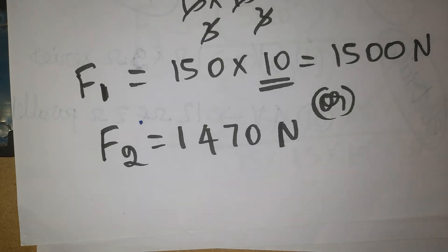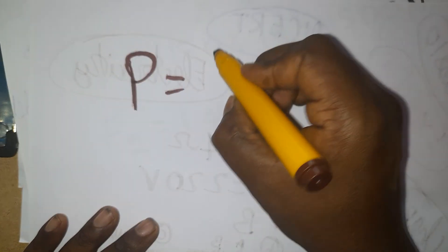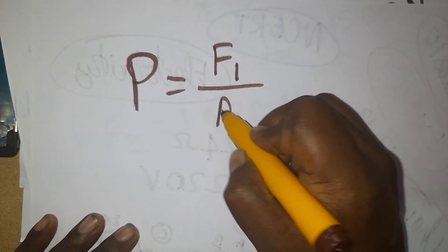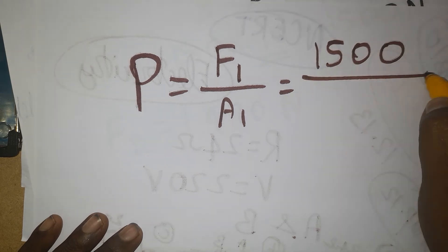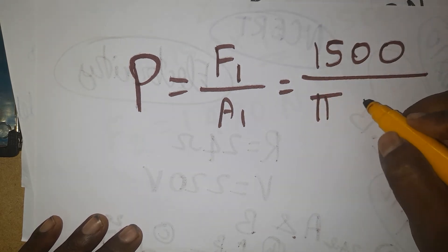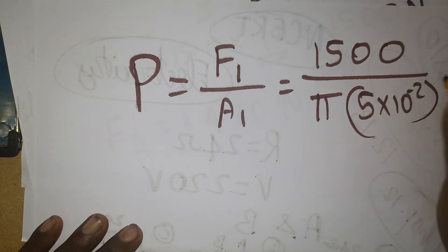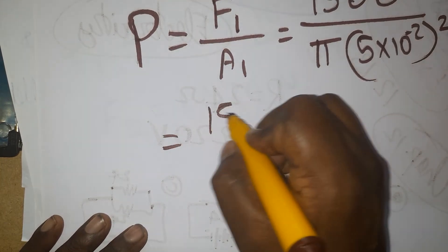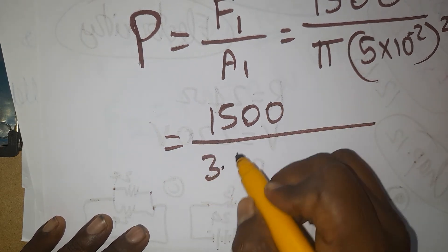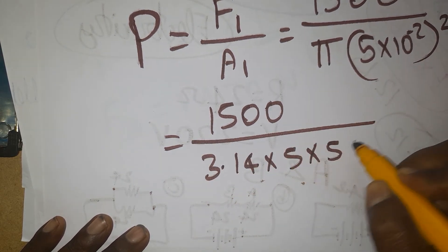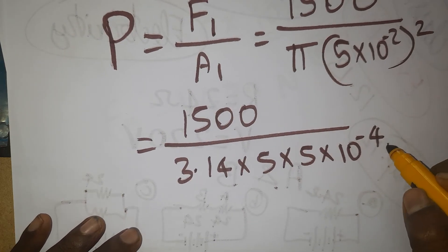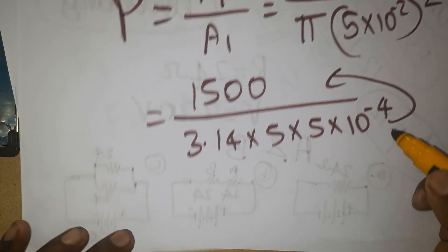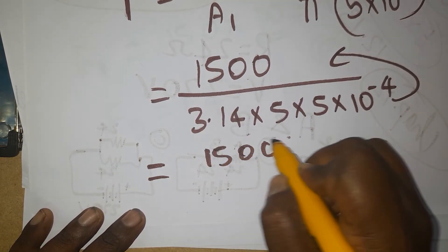For the second question, Pressure = Force / Area. Taking the left-hand side: Force 1 = 1500 N (just calculated), and Area 1 = pi × r1² = pi × (5 × 10⁻²)² = 3.14 × 25 × 10⁻⁴. The 10⁻² from the denominator brings 10⁺⁴ to the numerator.